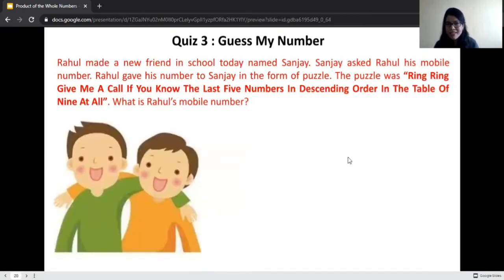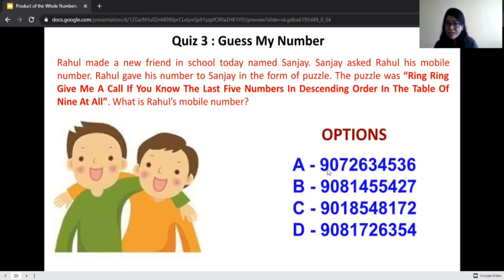Next quiz is Guess My Number. Rahul made a new friend in school today. His name is Sanjay. Sanjay asked Rahul for his mobile number. Rahul gave Sanjay his number but in the form of a puzzle. The puzzle was ring, ring, give me a call if you know the last five digits in descending order in the table of nine at all. Interesting puzzle, right? What is Rahul's mobile number? Here are your options. First option is 9072634536 or 9081455427, 9018548172 or 9081726354. What is the correct answer?